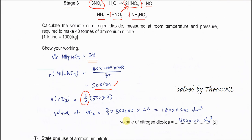After that you can calculate the volume because it says room temperature. So you just use the molar volume times the moles of NO2. So you get this answer.